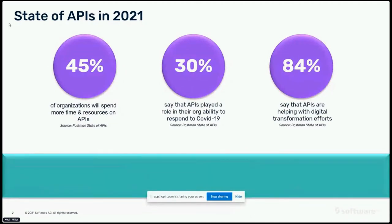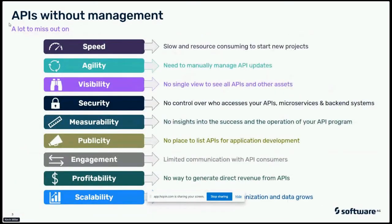We all know APIs are important. APIs give you access to data. As you expand your use of APIs from a single point-to-point API to a more holistic view, you start to see that you really need management across all of these APIs. These goals typically include speed to market, being able to quickly access things, security so that you can get the correct amount of access to the correct people, and eventually having the ability to do some sort of profitability or scalability.